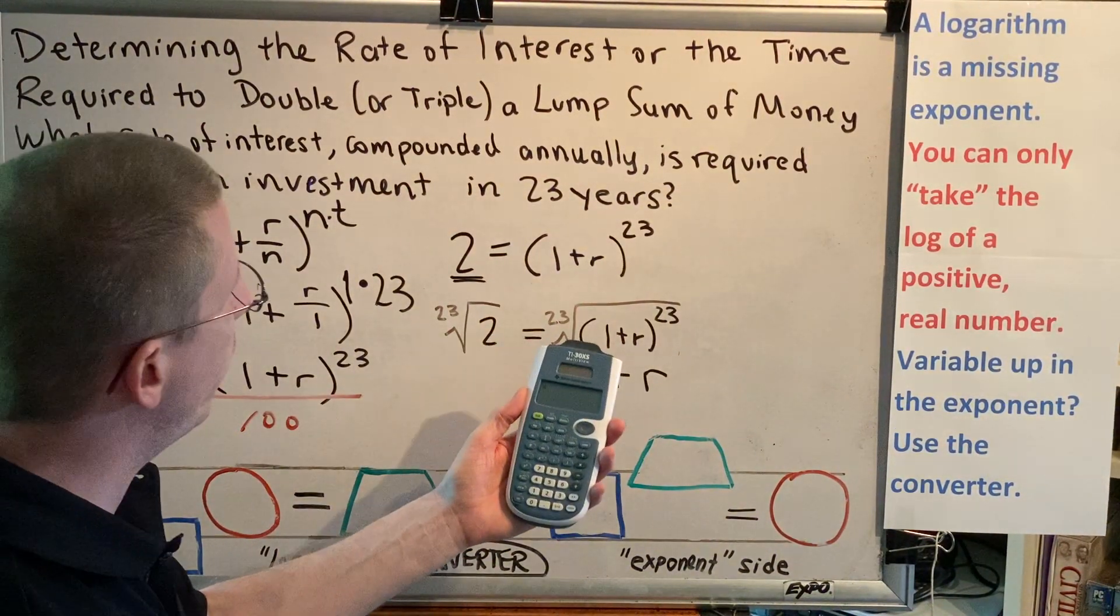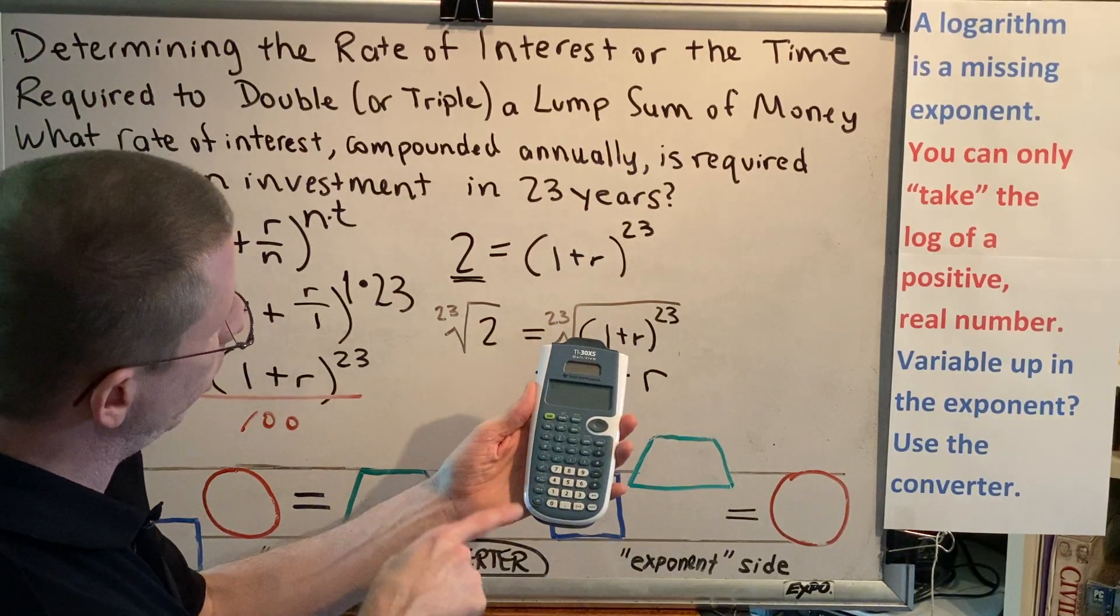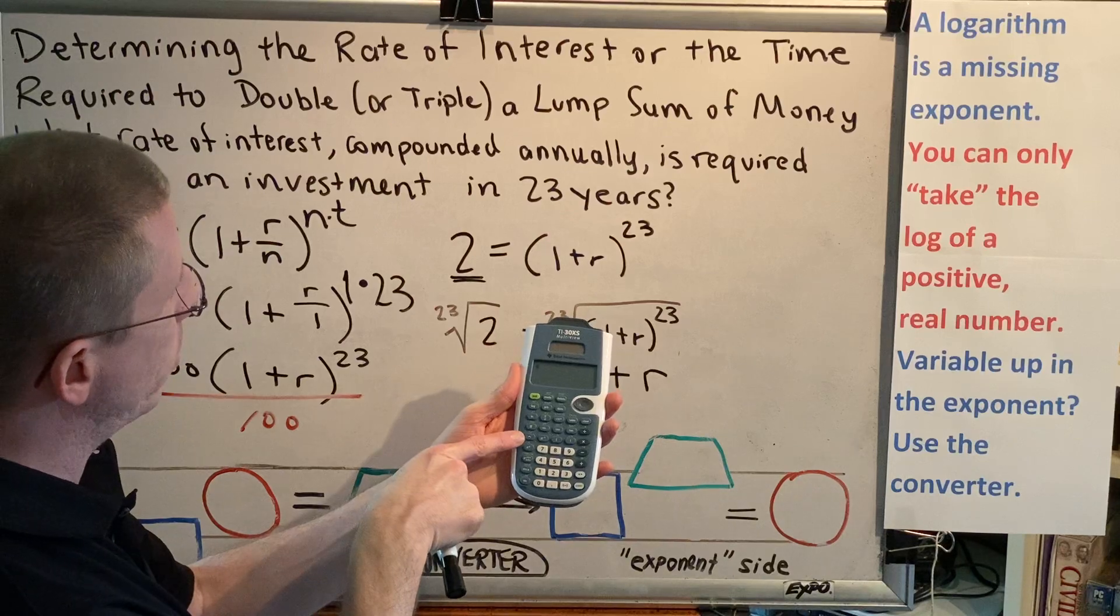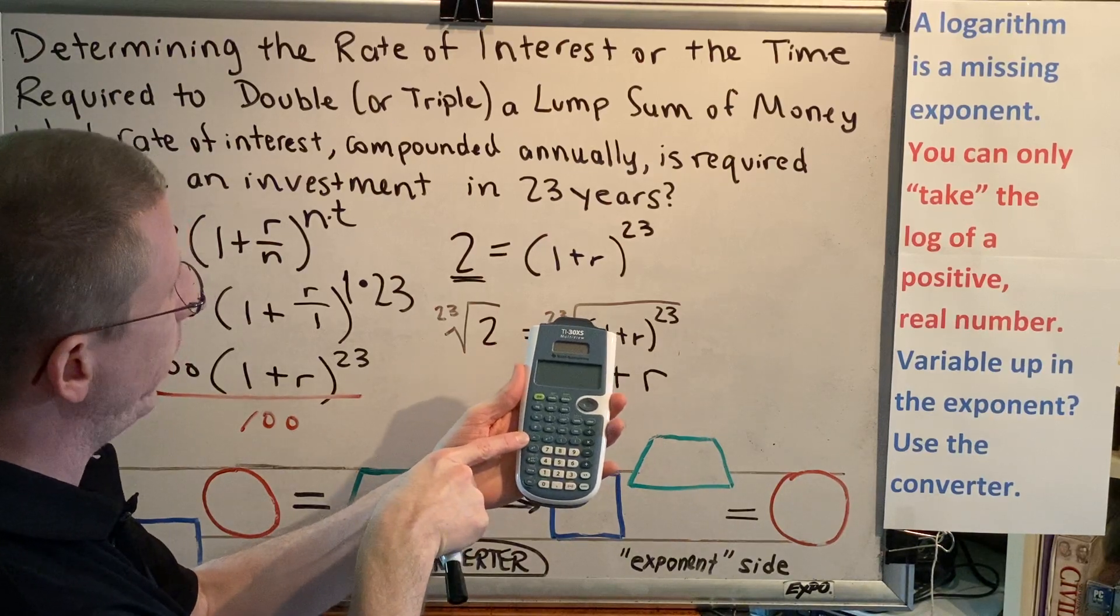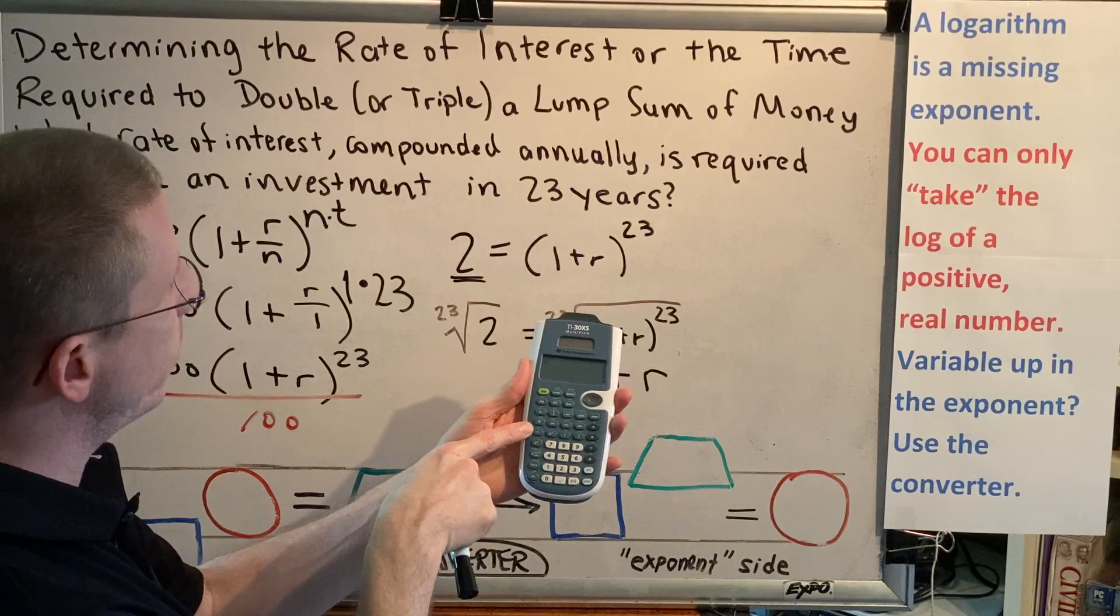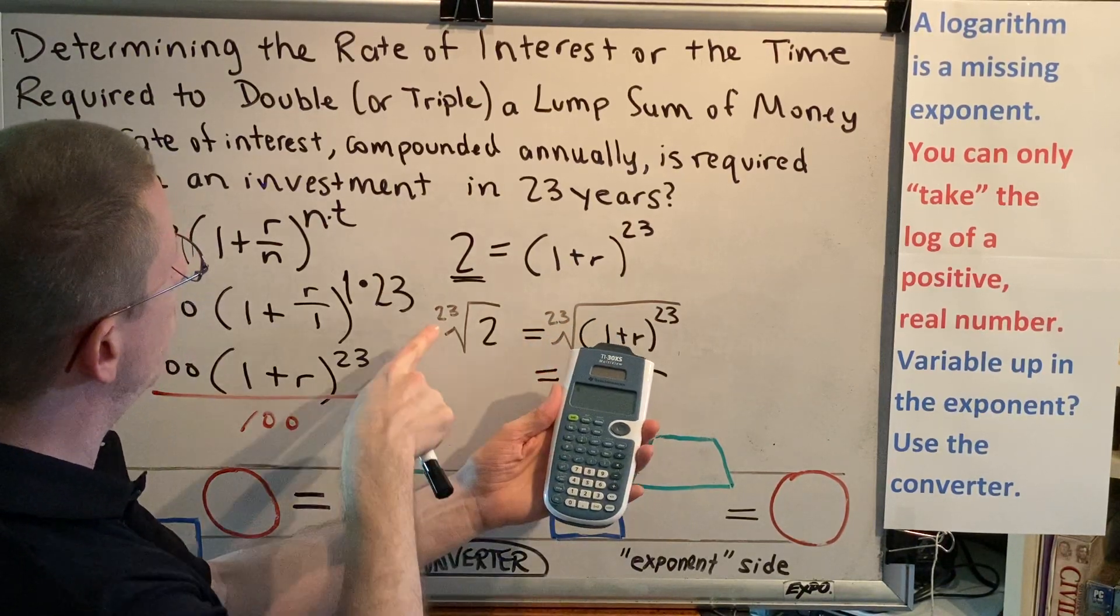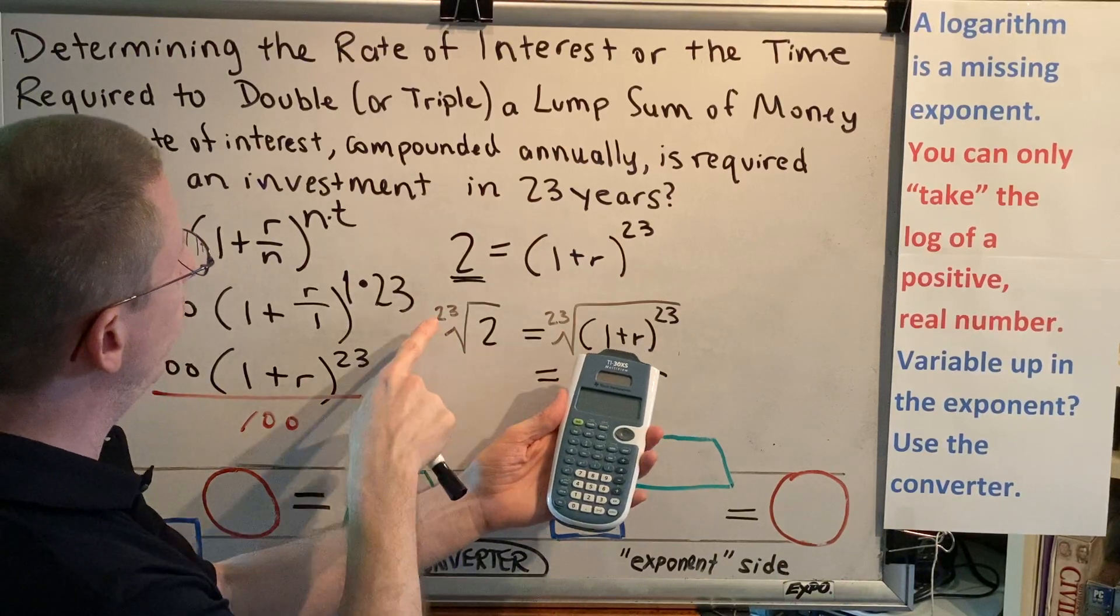Alright, well I'm using the TI-30XS multi-view, and on the left column, the fifth button down is a little upward-pointing arrowhead called a carat. Above that in green, it says x and then there's a little radical symbol. So the way we use our calculator to do a 23rd root is we tell the calculator what kind of root we want first.